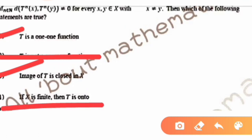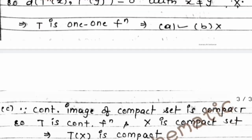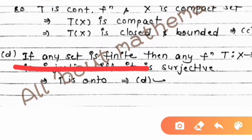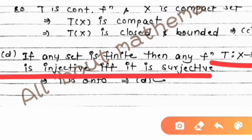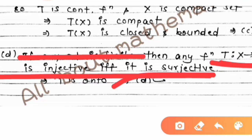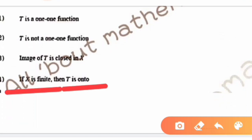Now option D: if X is finite then T is onto. If X is any finite set and T: X → X is injective (one-one), then T is also surjective (onto) — this is the finite set bijection principle. Since we have shown T is one-one, and X is finite, T must be onto. So option D is correct.